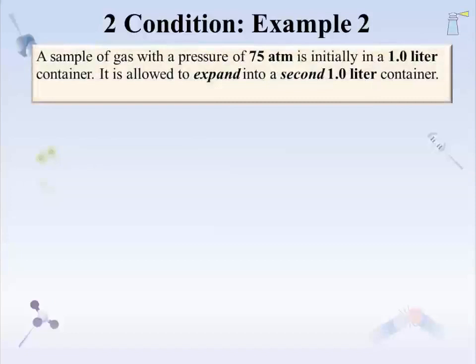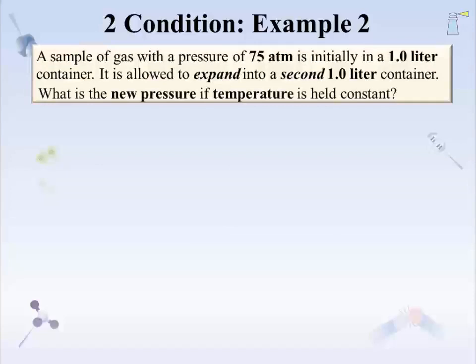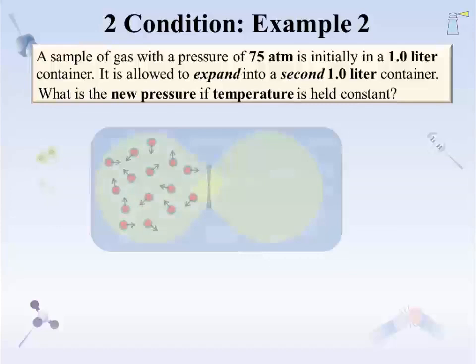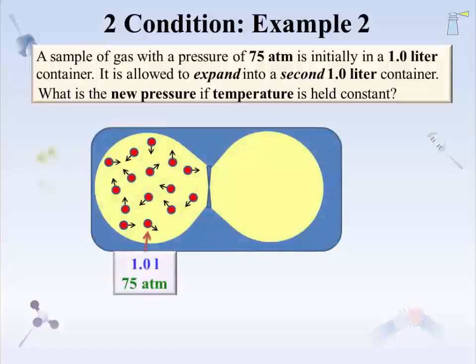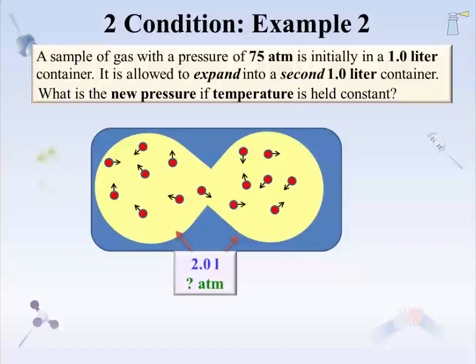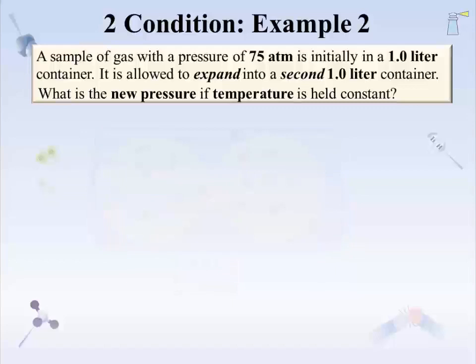On to Problem 2. A sample of gas with a pressure of 75 atmospheres is initially in a 1-liter container. It is allowed to expand into a second 1-liter container. What is the new pressure if temperature is held constant? A cartoon of this transition helps clarify the change. Starting with two 1-liter containers initially separated, all the gas is in the left container at 75 atmospheres. If the stopper between the containers is removed, the gas sweeps into the second container, effectively diluting the gas — the gas has more volume with the same number of particles, so the pressure has to go down.